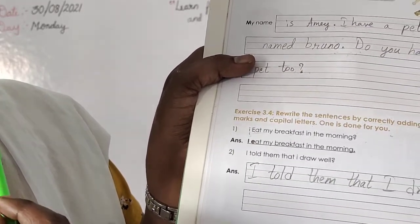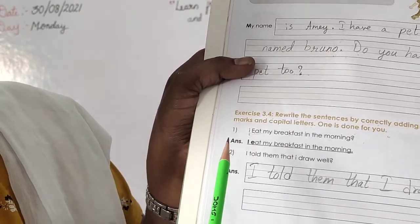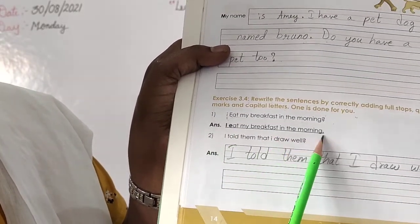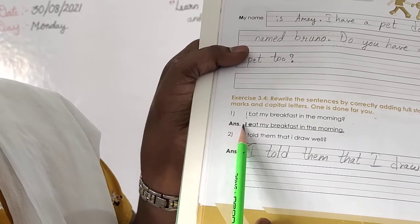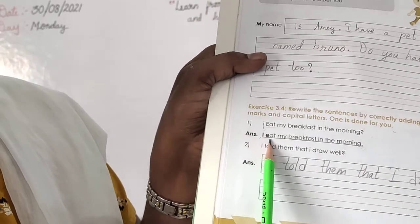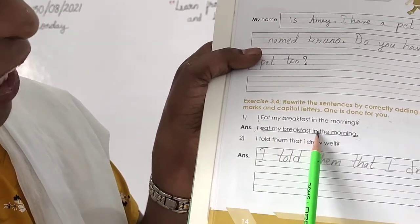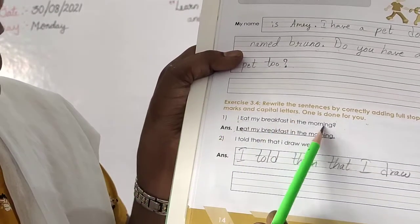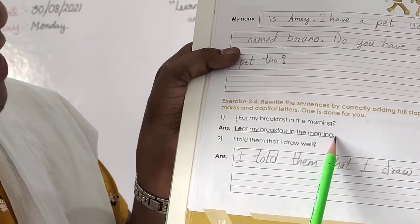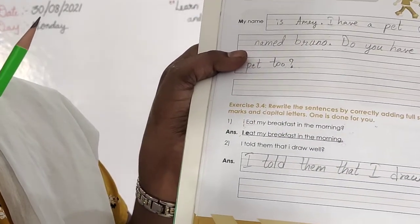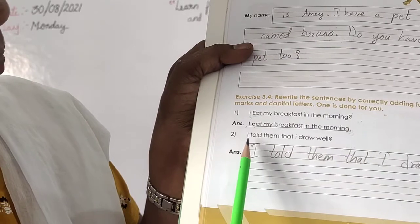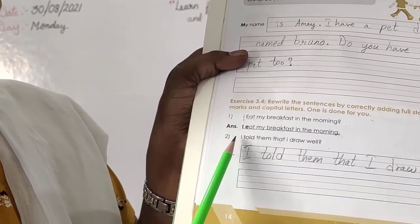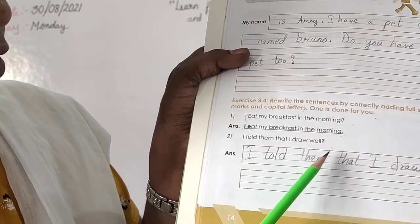See here, all are wrongly given. The first one should be in capital letter but they have given small letter. Then, here it should be small letter but they have given big letter — it is not a proper noun, it is just an action word. So they have given the answer also. See: 'I' written in capital, then 'eat' in small letter, then 'my breakfast in the morning'. It is not a question; they have given question mark here, but the answer will be full stop.